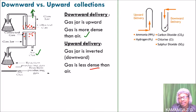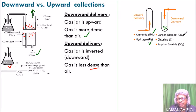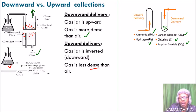In downward delivery, the gas is more dense than air, so it starts occupying the space at the bottom and pushes the air out from the top. Some gases collected by upward delivery include ammonia gas, hydrogen gas, and dry carbon monoxide. An example of gases collected using downward delivery include carbon dioxide, chlorine gas, and sulfur dioxide. That is how you answer this question.